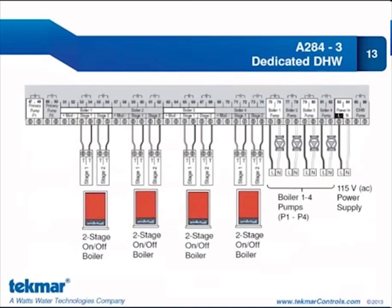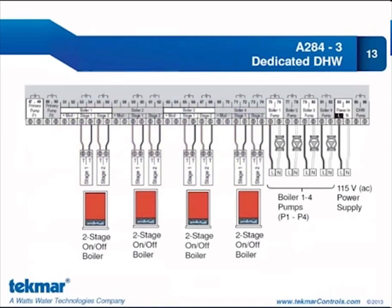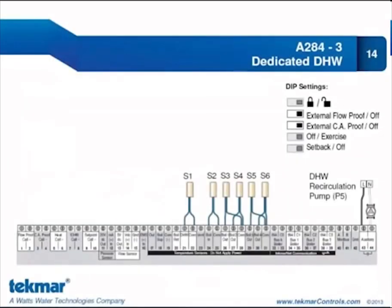Taking a look at the bottom half of the control for application 3, it's certainly one of our simpler installations. The primary pump terminals are both empty since we have no primary pumps to control. We have four boiler banks, connecting stage 1 and stage 2 terminals to the stage 1 and stage 2 TT contacts on each two-stage on-off boiler. We also have a boiler pump for each of our four boilers, and 115V power in. The top half is even more simple — we have sensors for domestic hot water, boiler inlet, and individual boiler outlet sensors, and the auxiliary relay is being used to control the domestic hot water recirculation pump.